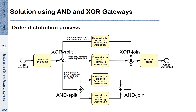We observe here that the activity 'forward suborder to Amsterdam warehouse' is shown twice — once in the middle as the upper activity and once at the bottom. Also, the forwarding of the suborder to the Hamburg warehouse is shown twice. This is an ineffective way of representing that process.